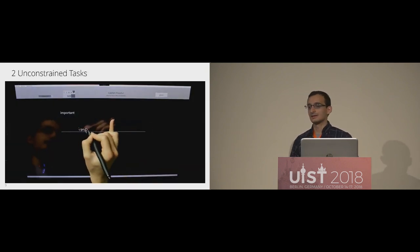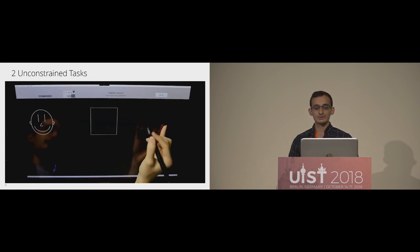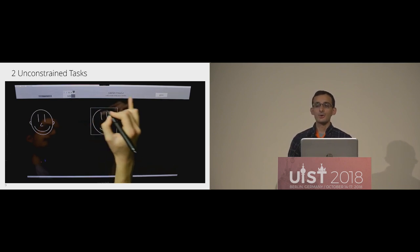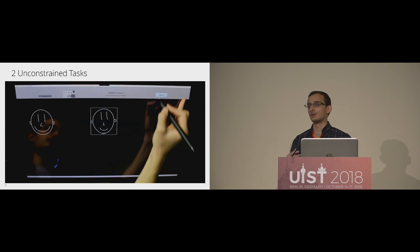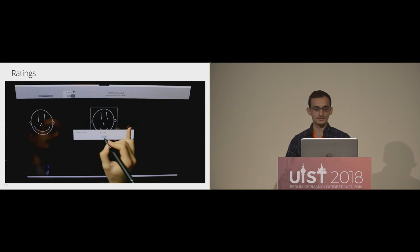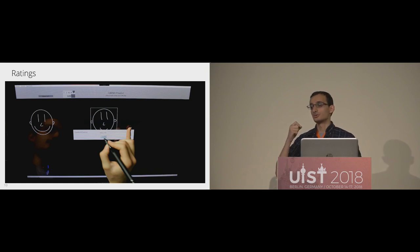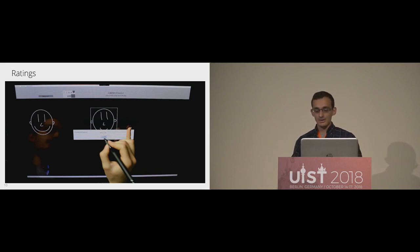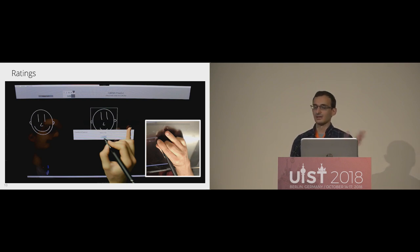We also included two unconstrained tasks — writing the word 'important' on a line and drawing a small smiley face in a box — to give users a more realistic environment of how they would use these postures. Finally, the user was asked to rank each posture between one and seven. At the start, participants completed the task set first with their normal handwriting posture, which they were asked to rate as seven, calibrating the top of the scale. We also had a specially chosen difficult posture which participants were asked to rank one, calibrating the lower end of the scale.